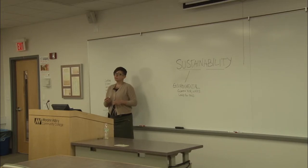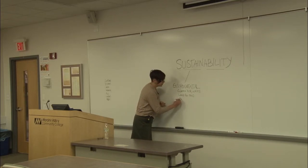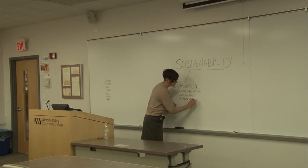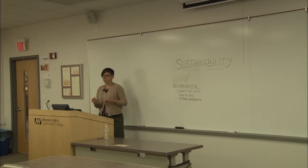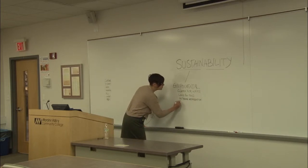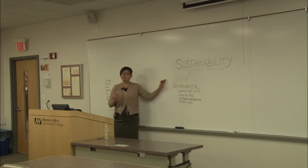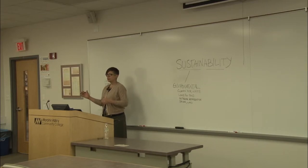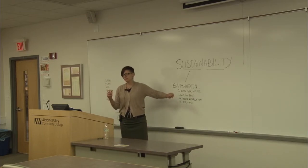Those are things that we absolutely need to survive. But we also like other things like access to outdoors and outdoor recreation. And then there are other environmental resources like natural resources, including fossil fuels, but also renewable resources like solar energy or wind power. These are things we need to be thinking about when considering how we're going to sustain our quality of life now and into future generations.